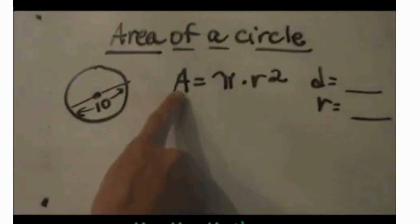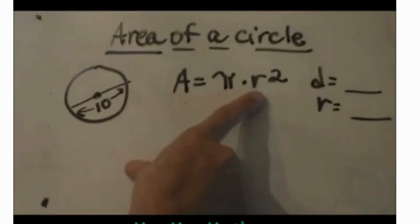First of all, you need to know your formula. The area of the circle is equal to pi times the radius squared.